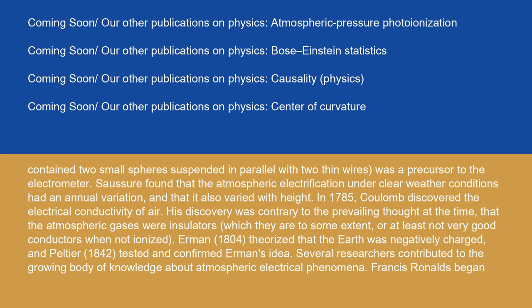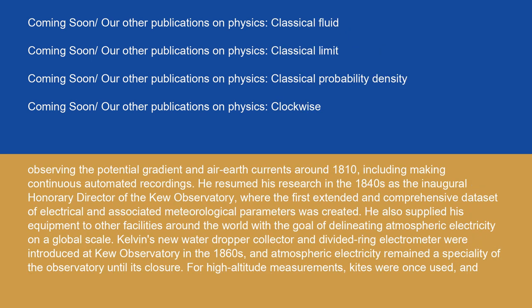Ehrman (1804) theorized that the Earth was negatively charged, and Peltier (1842) tested and confirmed Ehrman's idea. Several researchers contributed to the growing body of knowledge about atmospheric electrical phenomena. Francis Ronalds began observing the potential gradient and air-earth currents around 1810, including making continuous automated recordings. He resumed his research in the 1840s as the inaugural honorary director of the Kew Observatory, where the first extended and comprehensive data set of electrical and associated meteorological parameters was created. He also supplied his equipment to other facilities around the world with the goal of delineating atmospheric electricity on a global scale. Kelvin's new water dropper collector and divided ring electrometer were introduced at Kew Observatory in the 1860s, and atmospheric electricity remained a speciality of the observatory until its closure.